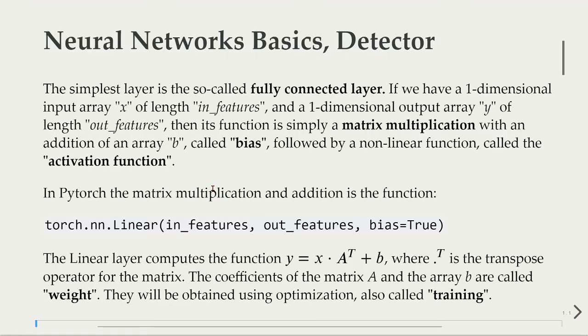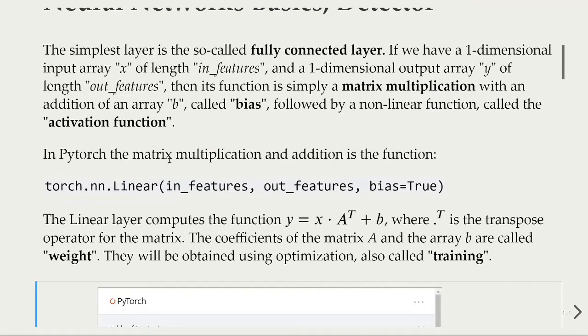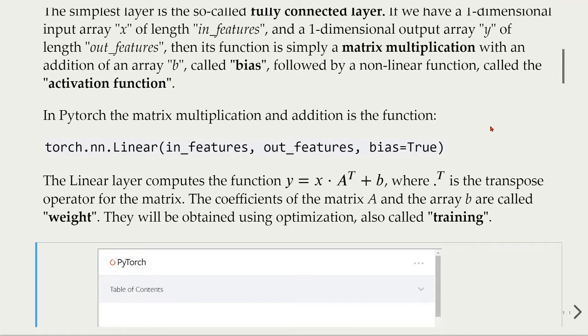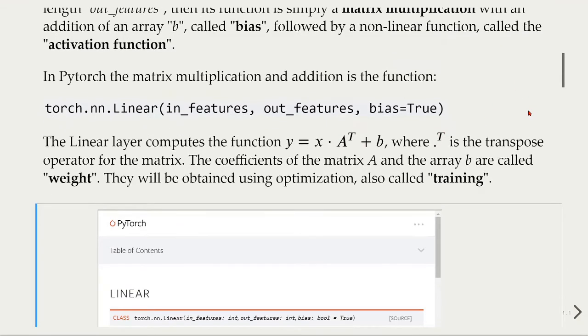In PyTorch, the matrix multiplication and addition is implemented in this function. The linear layer computes the function Y equals X multiplied by A transpose plus B, where T is the transpose operator for the matrix. The coefficients of the matrix A and the array B are called weights, and they will be obtained using optimization, also called training in neural networks terminology.